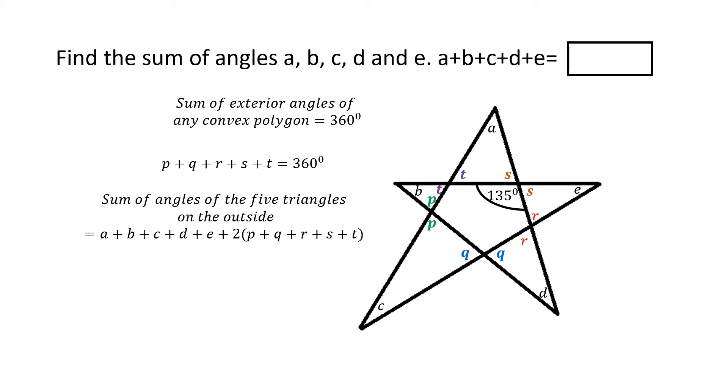And in that sum, each of those exterior angles will make its appearance twice. So we can write the collective sum of the angles of those five triangles on the outside as A plus B plus C plus D plus E plus 2 times P plus Q plus R plus S plus T.